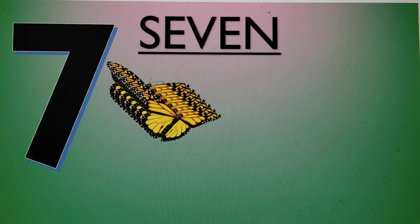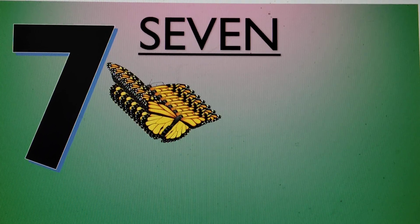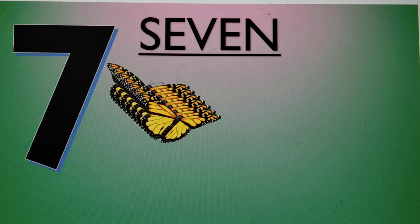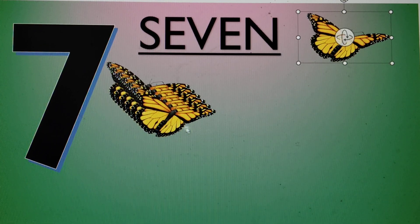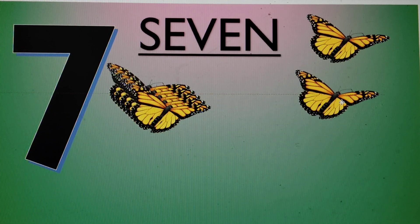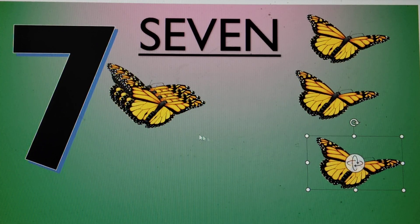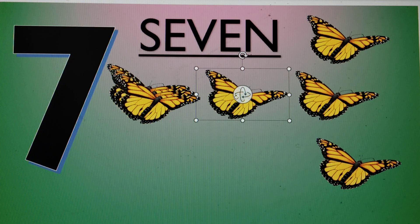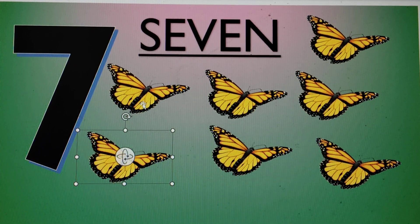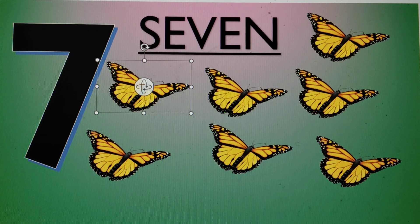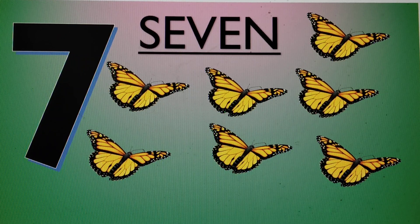Now the number is number 7. S-E-V-E-N, seven. Let's make seven butterflies: number one, number two, number three, number four, number five, number six, and this is number seven. Seven butterflies!